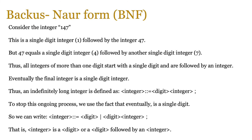We can do the same thing with numbers. On screen you see an example that does exactly that. Consider the integer 147 — this is a single-digit integer 1, followed by the integer 47. But 47 itself can be a single-digit integer 4, followed by another single-digit integer 7. Thus, all integers of more than one digit start with a single digit and are then followed by an integer. Eventually, the final integer is a single-digit integer. So we can define this indefinitely long integer as: an integer is the equivalent of a digit followed by an integer.